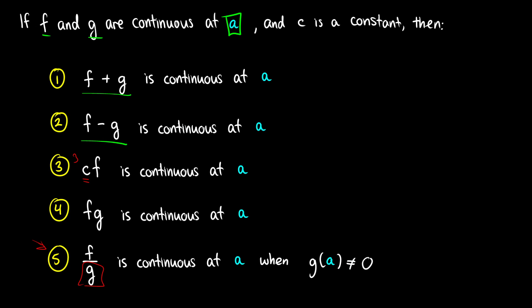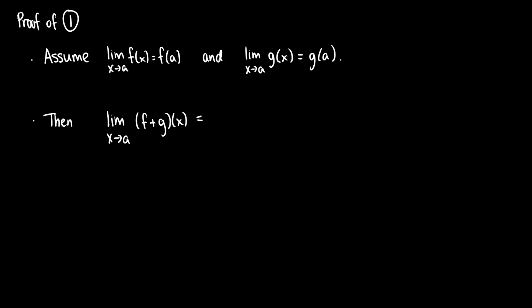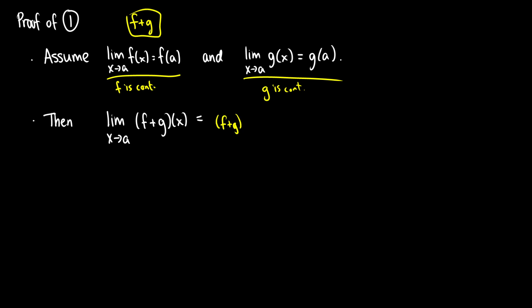Those are the five rules. I'm going to prove two of them — not super rigorous proofs using delta-epsilon, just using basic facts about limits and continuity. For the proof of law one — that f plus g is continuous — we assume both f and g are continuous. The definition of continuity says the limit as x approaches a of f of x equals f of a, and likewise the limit as x approaches a of g of x equals g of a. Now we want to show that the limit as x approaches a of (f plus g) of x equals (f plus g) of a.